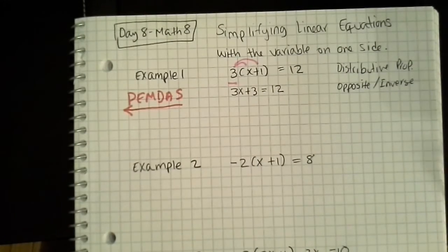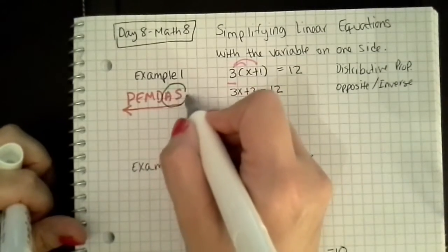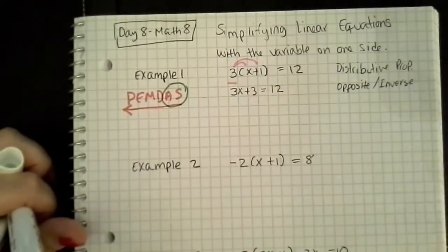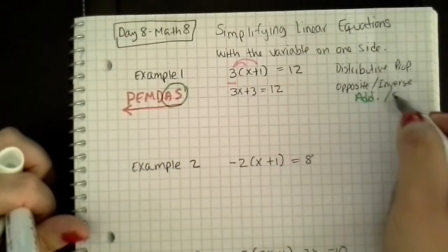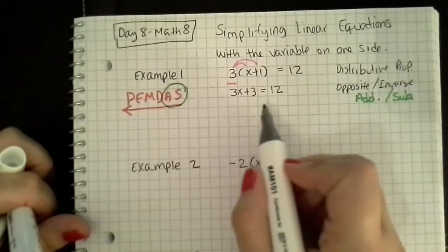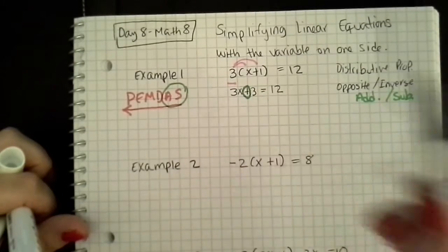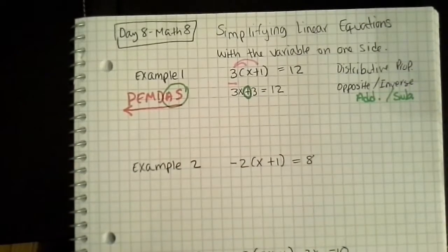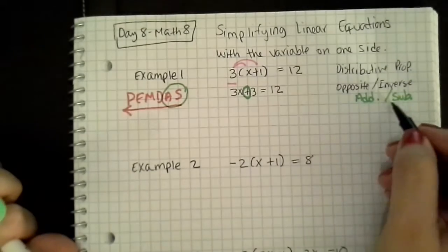And when I start using opposite and inverse operations, I begin with addition or subtraction. So I'm going to write addition, subtraction. And I look at what I'm adding or subtracting. In this case, I'm adding a 3, so the inverse operation of adding a 3 is going to be subtraction.